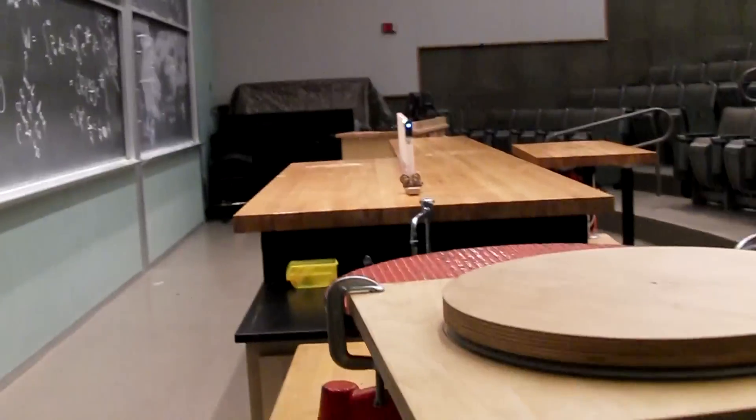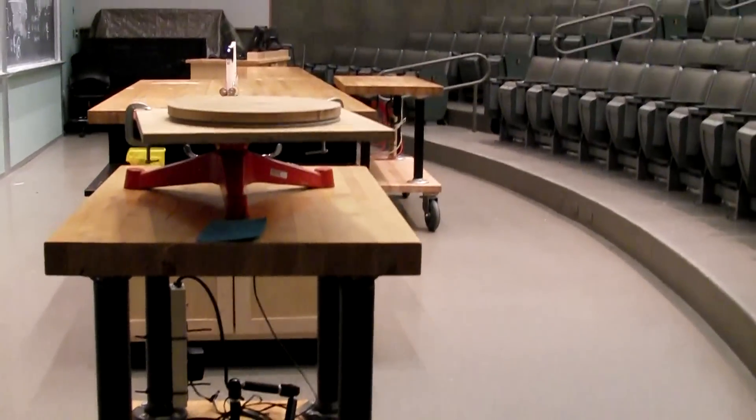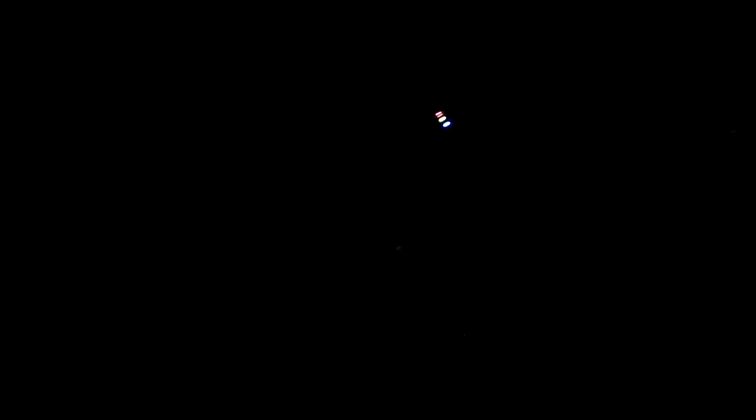So the first step to this experiment is to turn off the lights, and then if you line yourself up on the turntable, as we simulate the motion of the Earth as it rotates, we see how the stars change their position within our sky.